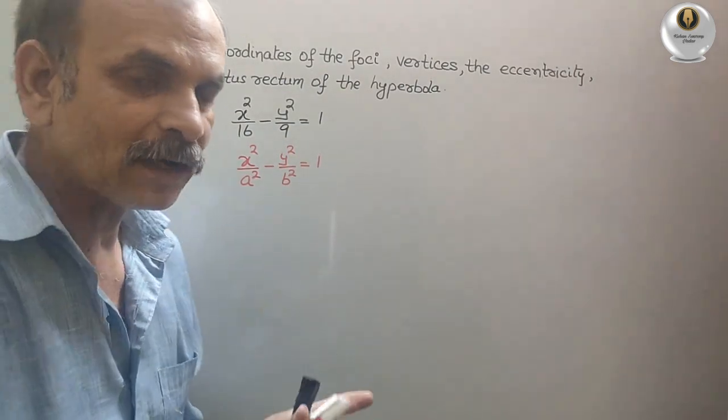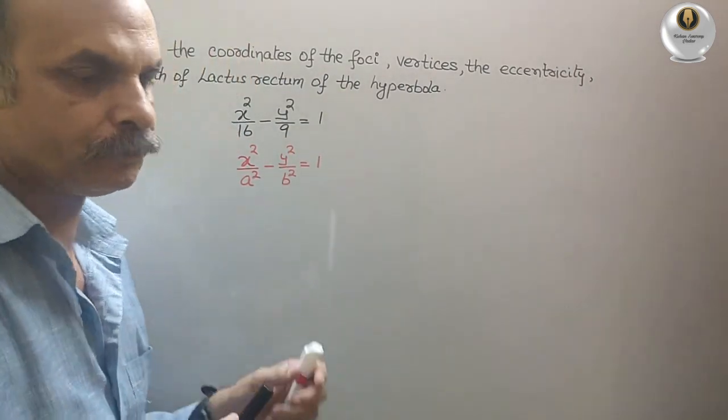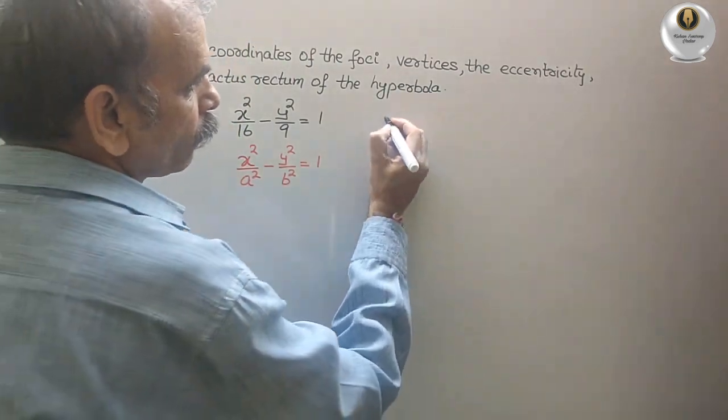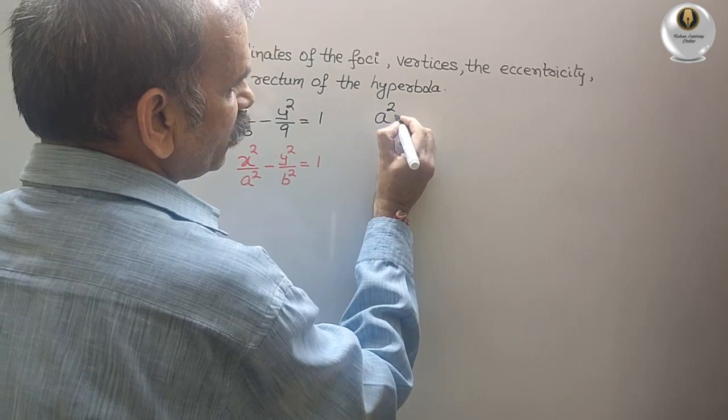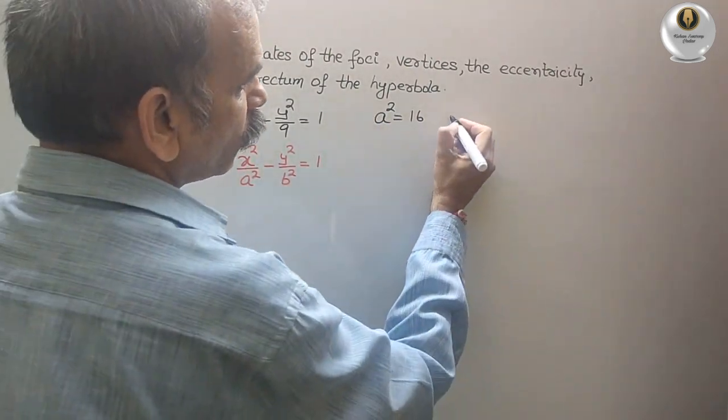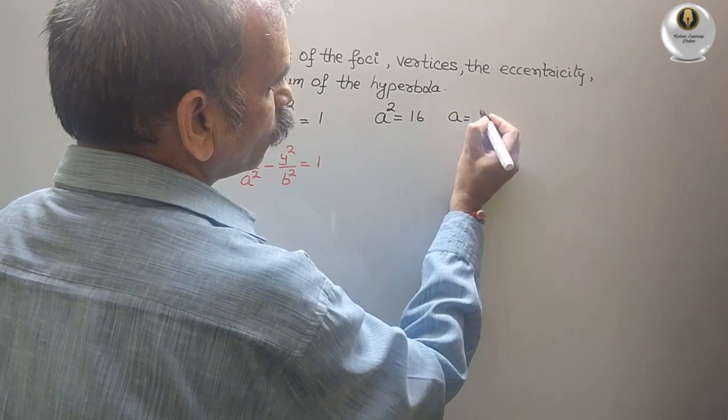So now start comparing them. A square is 16. A square is equal to 16. Therefore, A is equal to 4.